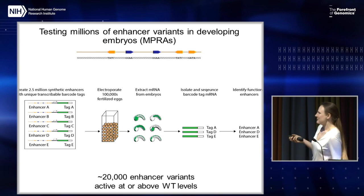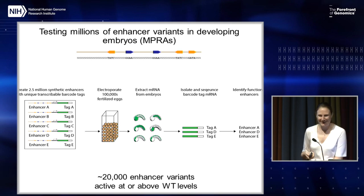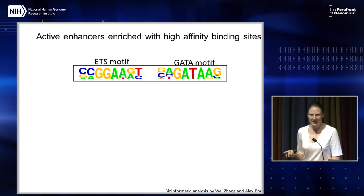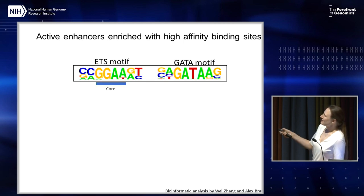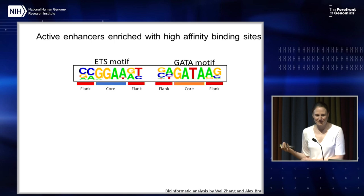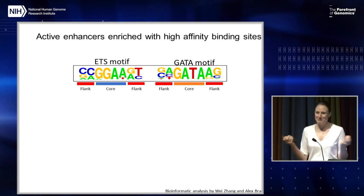In the first screen, we found 20,000 enhancers that were active at or above the levels of the endogenous enhancer. We now make tens and hundreds of millions of variants. When we did analysis, we came up with a really simple answer. Particular dinucleotides flanking the core — GGAA and GATA — are important for expression. These are PWMs for ETS and GATA, and the most represented base at each position gives you the sequence that binds the transcription factor with highest affinity. But if all you need is high affinity binding sites, we should be able to put favorite high affinity binding sites together and design tissue-specific enhancers — and that doesn't work, as many of you know.